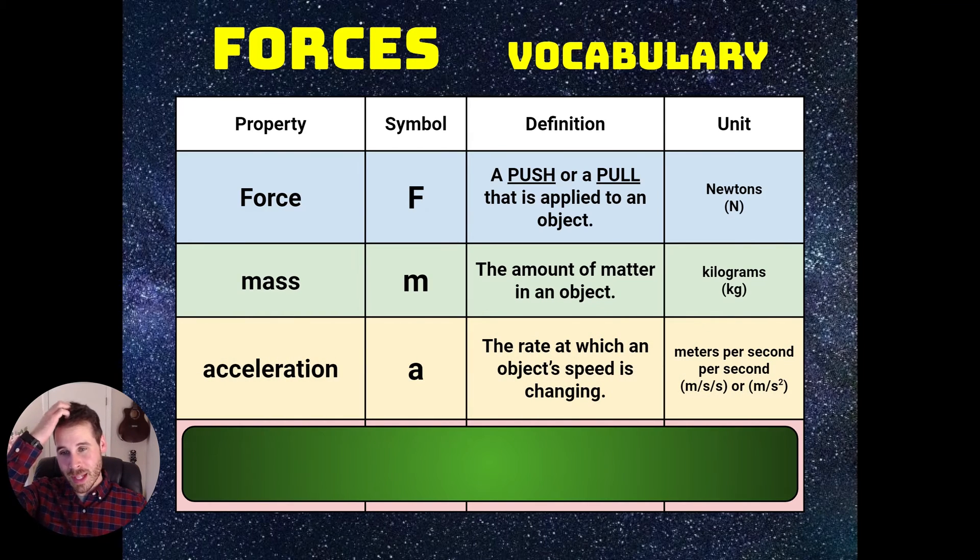Next is acceleration. And at this point in the year, you may have already learned a little bit about what acceleration is all about. But as a reminder, it's symbolized with the letter a, and it's defined as the rate at which an object's speed is changing. The unit for acceleration is the meter per second per second or the meter per second squared. And that's because it's a rate of how quickly you were changing your meters per second every second.